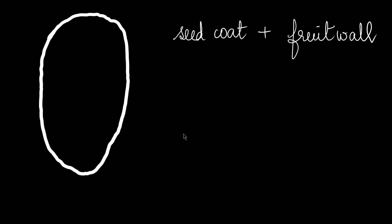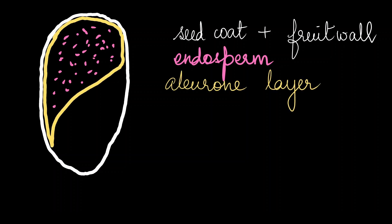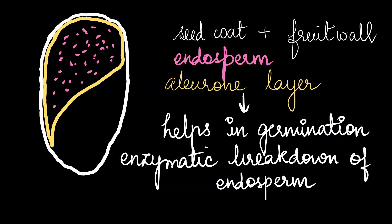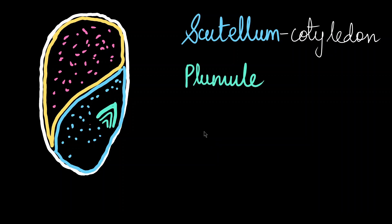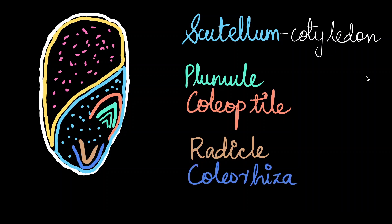The endosperm in monocot seeds is quite bulky because it stores food. The endosperm has an outer covering called the aleurone layer, which is a proteinaceous layer that breaks down the endosperm using enzymes, mobilizing the food for the germination process. The embryo is actually quite small and situated in one corner of the endosperm. The monocot seed has one single cotyledon called the scutellum. The embryo has a short axis consisting of plumule and radicle, which are covered by sheaths — the coleoptile covers the plumule and the coleorhiza covers the radicle, guiding them during germination.